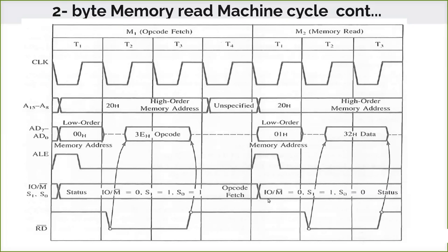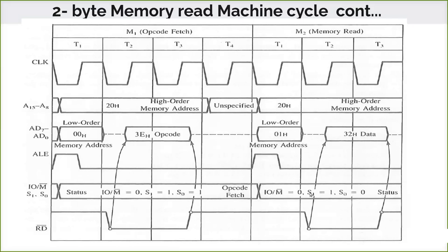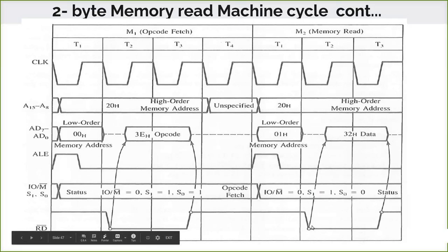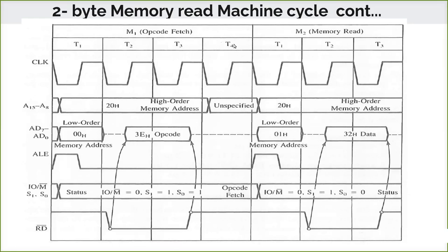Here again S1 is 1 and S0 is 0 — when S1 is 1 and S0 is 0 it indicates a memory read only, whereas when both are 1 it is an opcode fetch. After T2, when it reads, the read signal goes low indicating it has to read from memory. Now 32 is fetched and placed on the data bus, and then it will be executed. So the first machine cycle needs 4 T-states and the second needs 3 T-states, giving 7 T-states total for this 2-byte instruction.